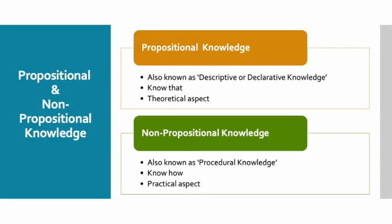Propositional and non-propositional knowledge. Propositional knowledge fact se related hai, jiske antargat 'knowing that' aspect aata hai. Propositional knowledge ko declarative sentences mein vyakt kiya jata hai. A priori knowledge, propositional knowledge ke antargat aata hai, kyonki donon hi types ke knowledge, reasoning ke zariye valid conclusions par pahunchne mein madad karte hain. Ye theoretical knowledge hai, kyonki iske antargat concepts ke baare mein jaana jata hai.